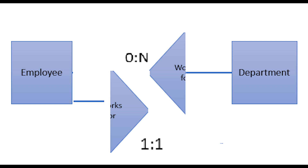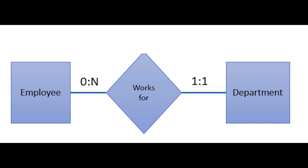Roles are added for clarification — for example, 'teaches' from teacher and student, or 'works in' from employee and office. Relationship types can be characterized with cardinalities, which are the minimum and maximum number of relationship instances an entity can participate in. For example, zero colon N on the left and one colon one on the right side towards department — the left side is minimum cardinality and the right side is maximum. So department can have a minimum of zero employees and a maximum of N, while an employee must have at least one department and can only have a maximum of one department.